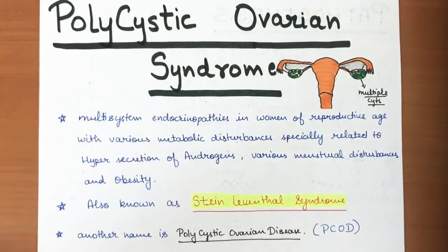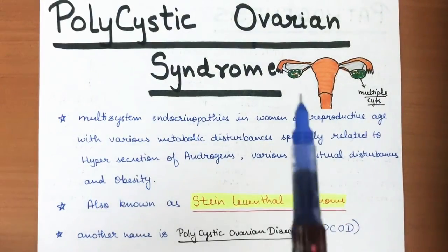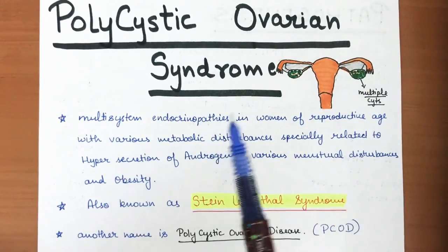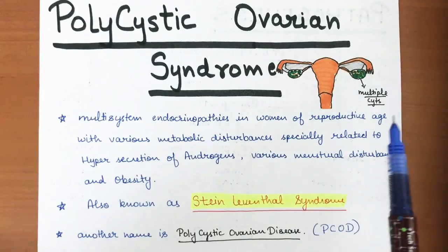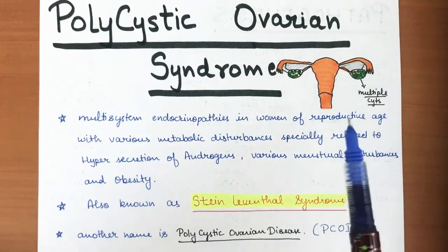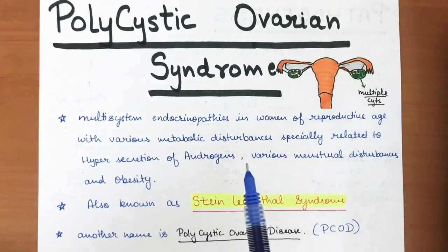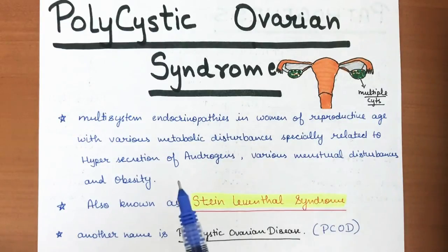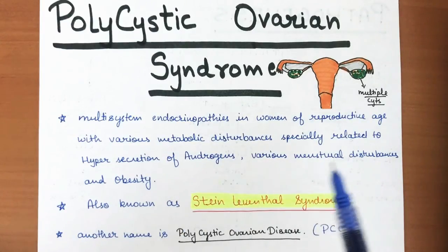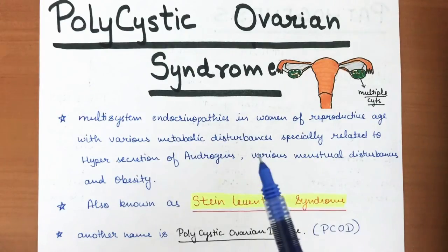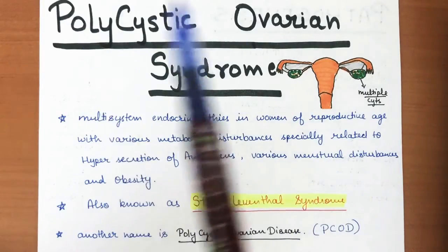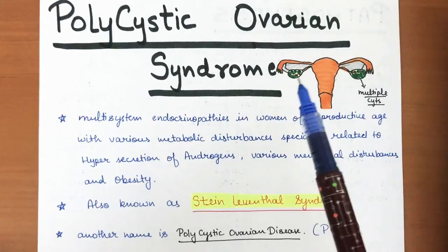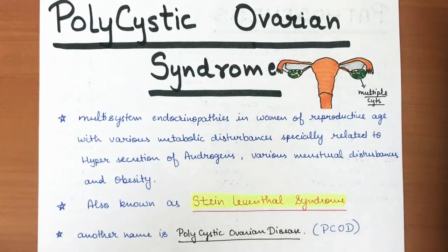In this video I am going to tell you about polycystic ovarian syndrome. It is a multi-system endocrinopathy in women of reproductive age, with various metabolic disturbances related to hypersecretion of androgens, menstrual disturbances, and obesity. It is named polycystic because there are multiple cysts — usually more than 12 small cysts — formed inside the ovary.